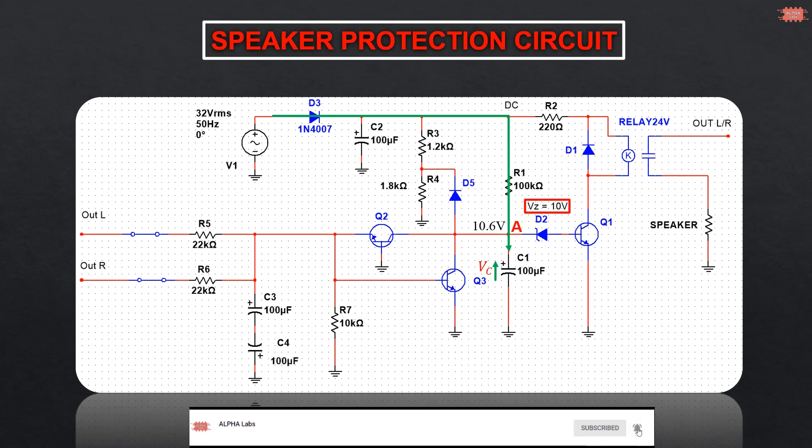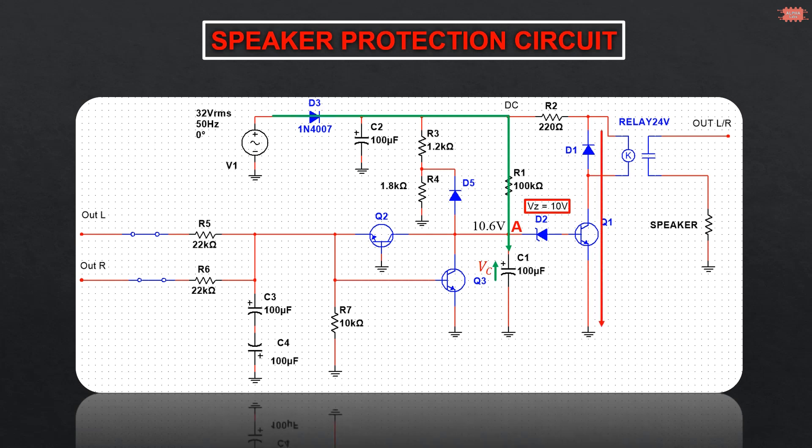When the voltage of capacitor reaches 10.6V, transistor Q1 will conduct. When transistor Q1 conducts, the relay will switch on. The period of time from when the power switch is turned on until the voltage of capacitor reaches 10.6V is the delay time.